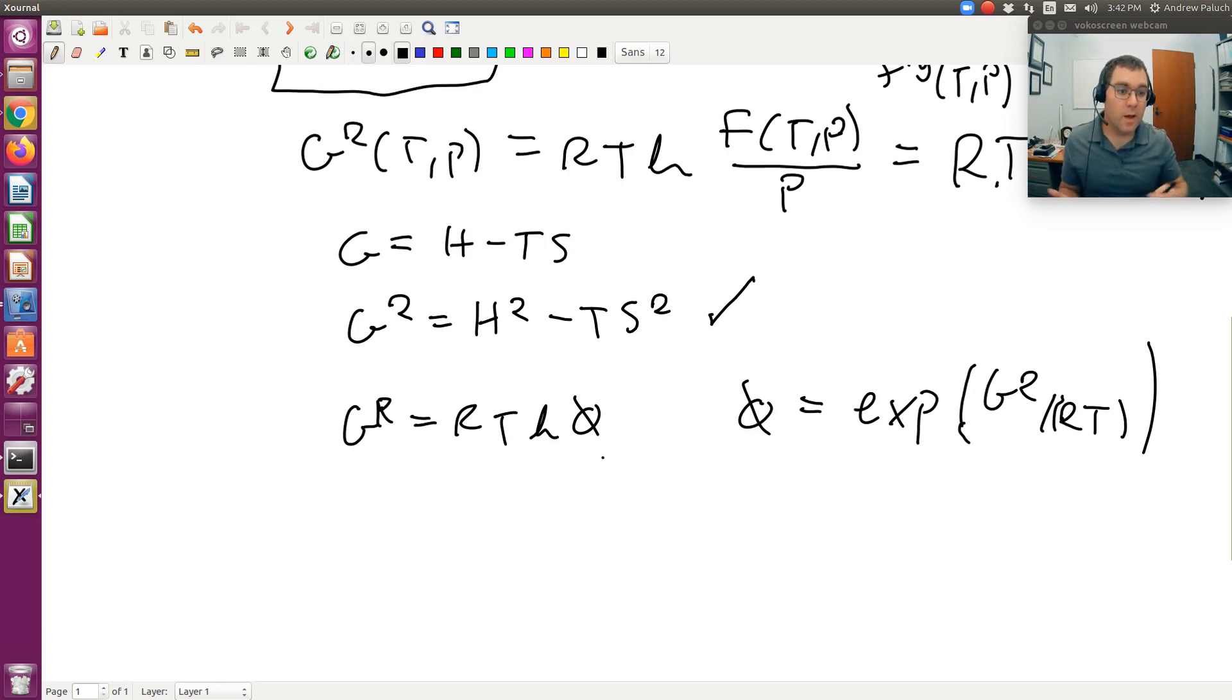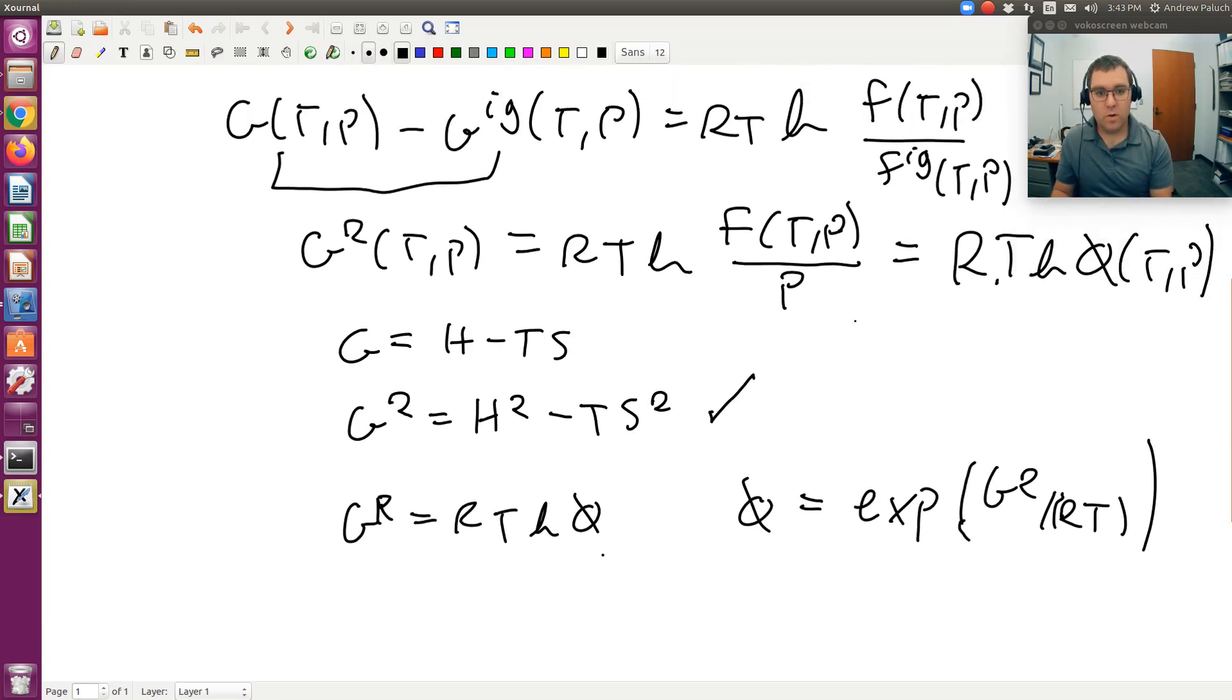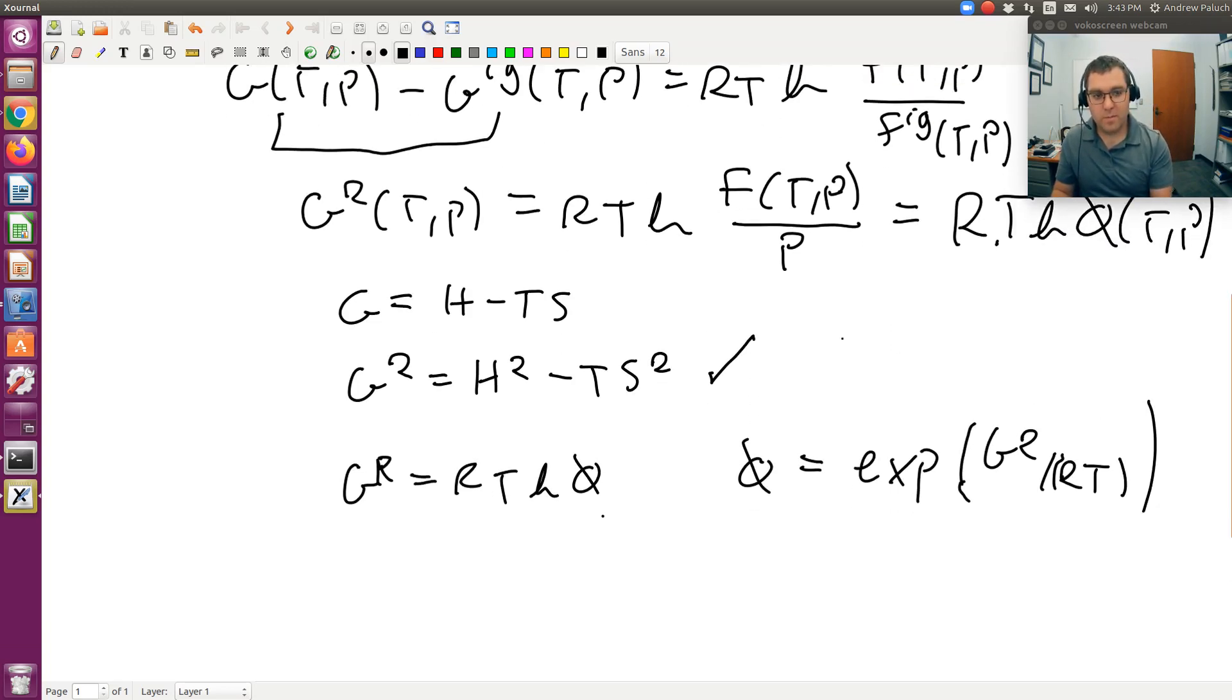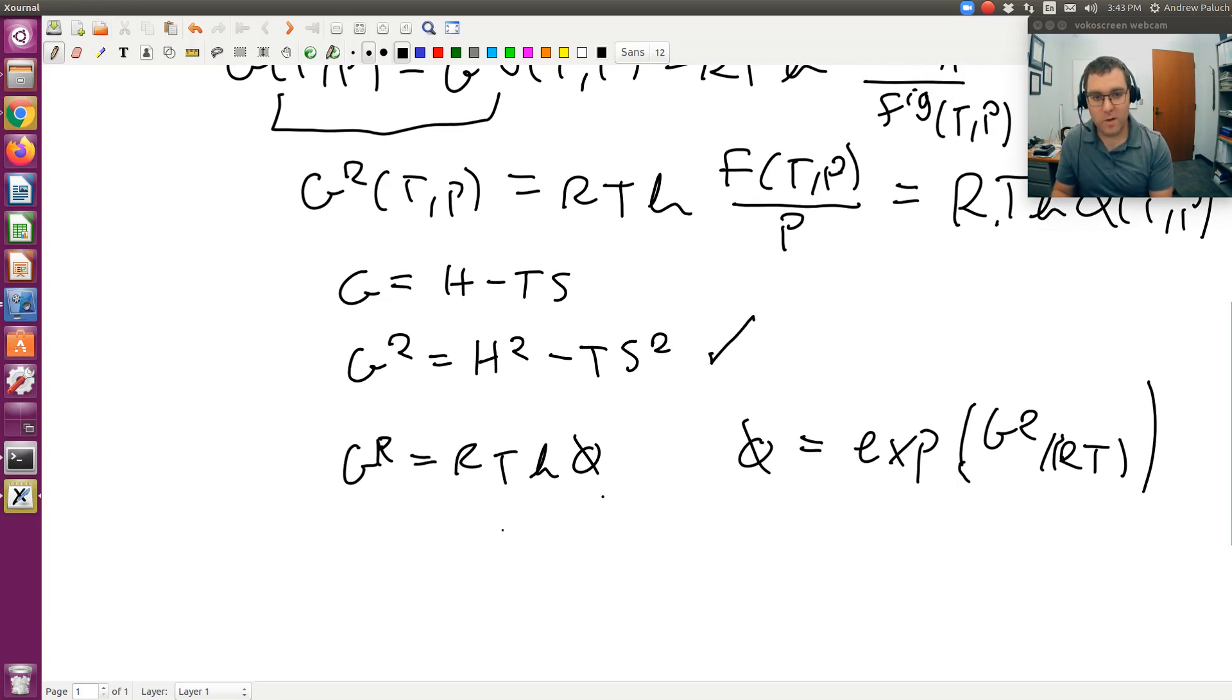So you can then directly calculate phi. So phi will be dimensionless. And then, going back up to this expression, but not even really necessary. So if I want F, then F is equal to phi times P. So once I calculate phi from GR using the data in the table, I could then go and directly calculate F.